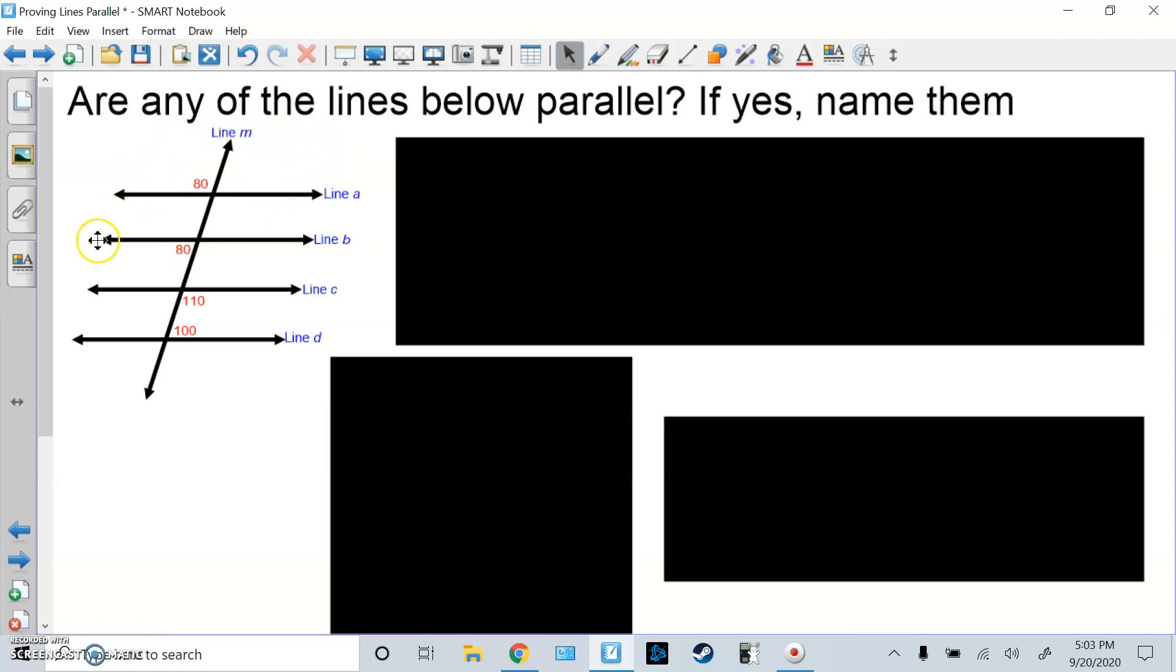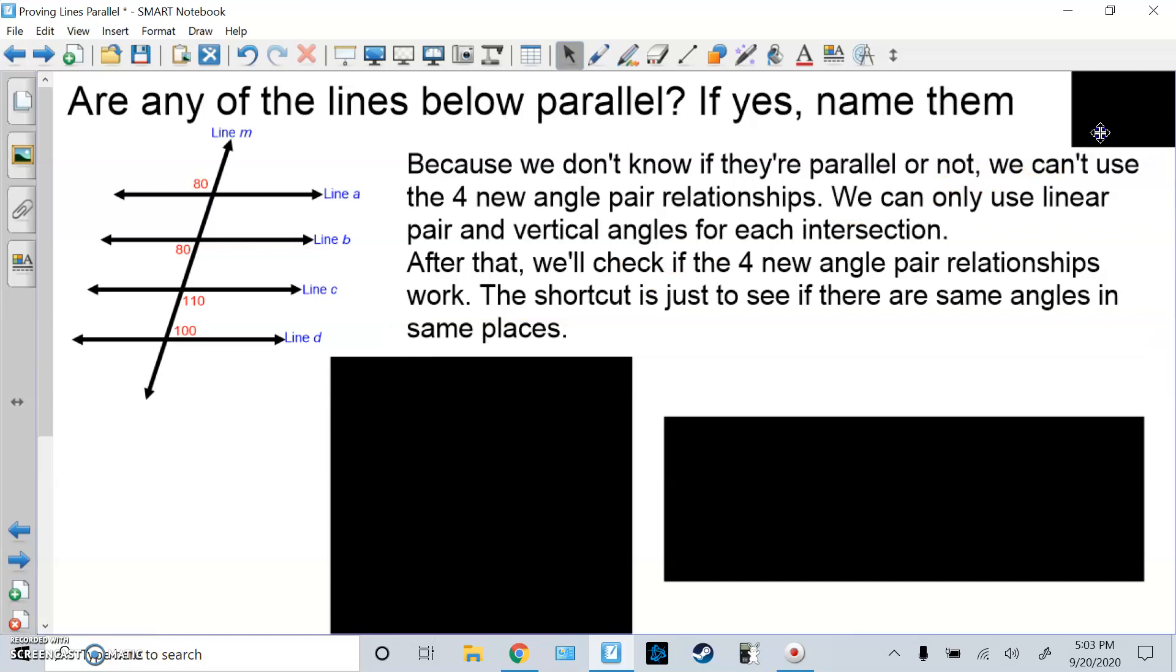So are any of these lines below parallel? If yes, name them. Because we don't know if they're parallel or not, we can't use the four new angle pair relationships. We can only use linear pair and vertical angles for each intersection. After that, we'll check if the four new angle pair relationships work. The shortcut is to see if there are the same angles in the same places.